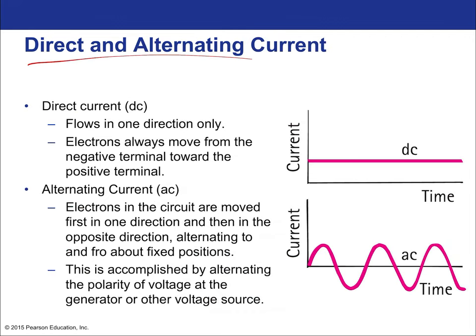The difference between direct and alternating current: direct current comes from batteries and flows in one direction — no sloshing back and forth. Electrons always move in one direction. All batteries produce direct current. All plugs in the wall are alternating current — electrons in the circuit are moved first in one direction and then another. The rate at which the current alternates in your wall is 60 Hz, meaning it happens 60 times per second, so the period of oscillation is one-sixtieth of a second.